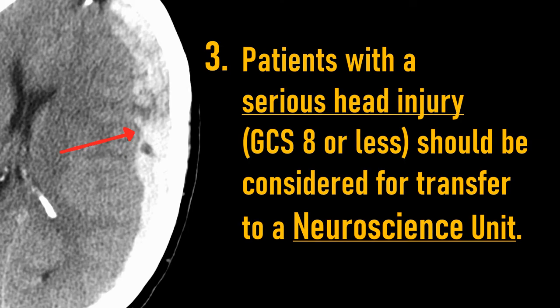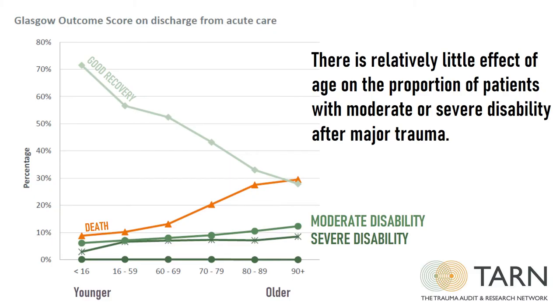Three: patients with a serious head injury — GCS 8 or less — should be considered for transfer to a neuroscience unit. Older people who survive major trauma have similar outcomes to their younger counterparts.